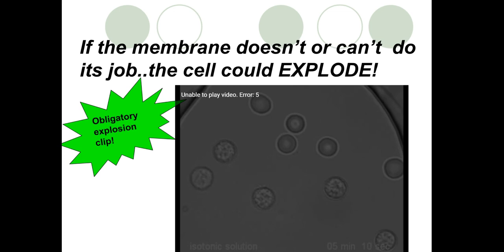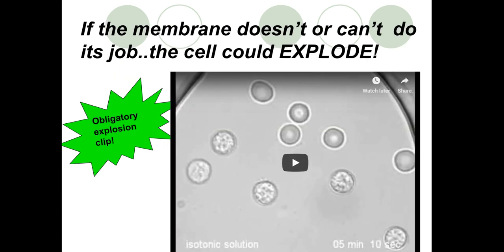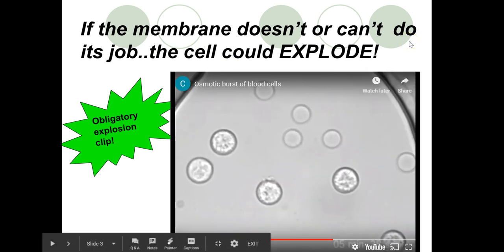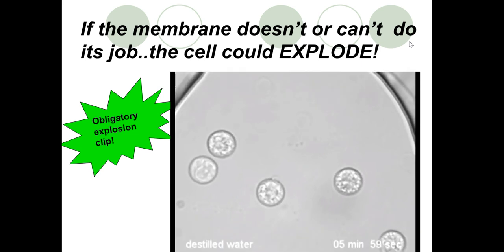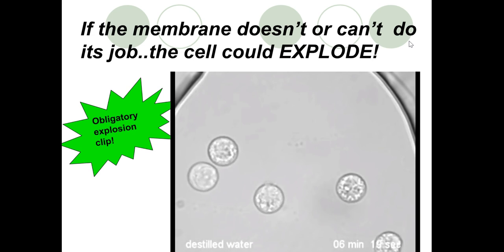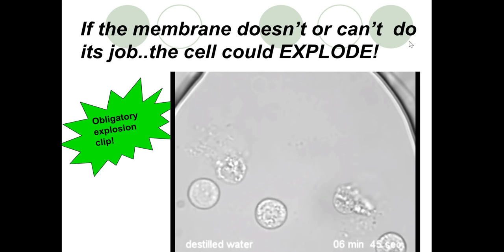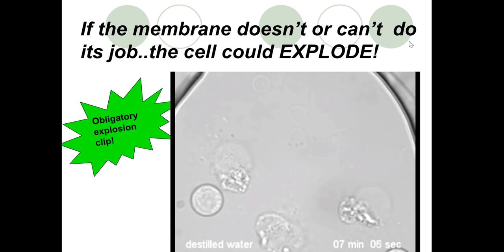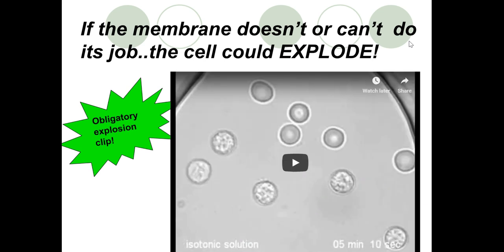If the membrane doesn't or can't do its job, the cell could explode. Watch what happens in this short video clip when the cell membrane doesn't do its job. The job of the cell membrane is to keep some things in the cell and keep some things out of the cell. One of the things the cell can't take on too much of is water. If a cell takes on too much water, it over-inflates like a water balloon that's been over-filled. This is your obligatory explosion clip for the video. Check out these cells exploding. Too much water filling the cell. That's what happens to the cells when they over-inflate.